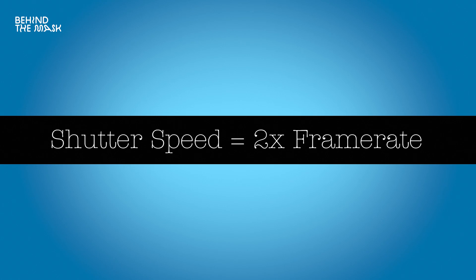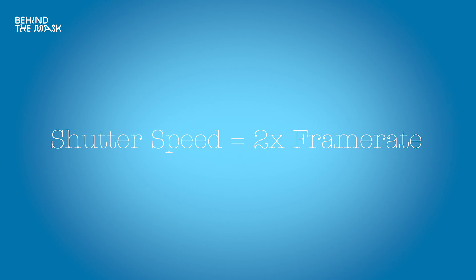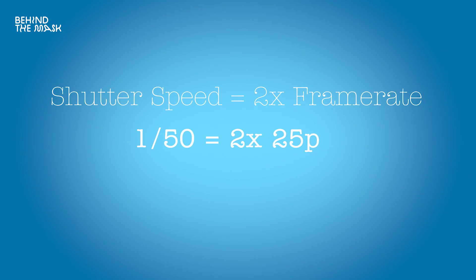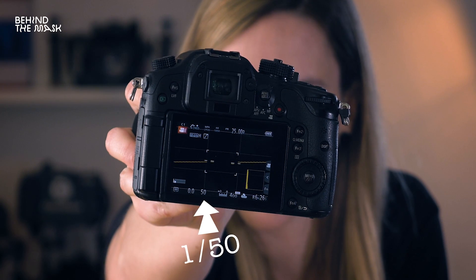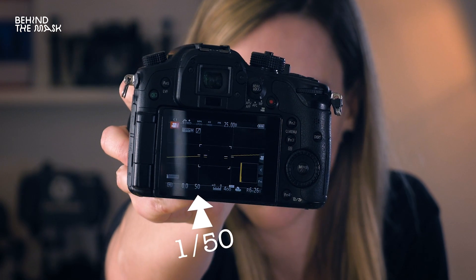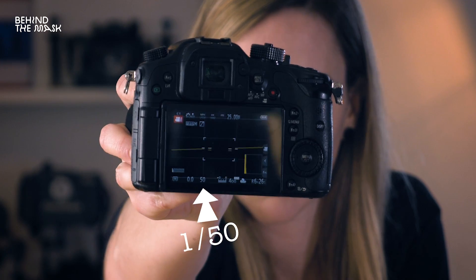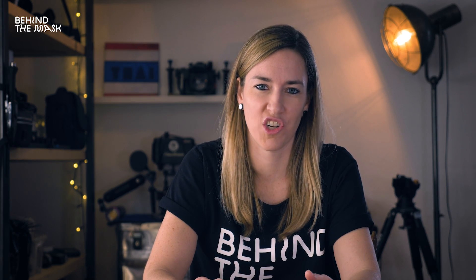The shutter is usually displayed as one slash a number — some camera manufacturers just have the number, so it looks something like at the bottom of the frame you can see a 50. This means the shutter opens and closes at 1/50th of a second. Usually there are dedicated dials to change the shutter speed — you can see the dial at the front here, and with this camera it's a top dial.